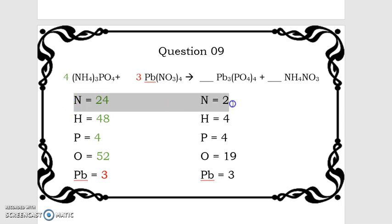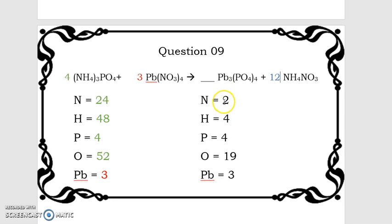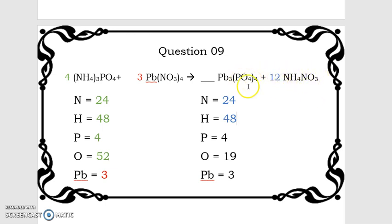Now we're going to balance the nitrogen. 2 times blank equals 24 — so 2 times 12 equals 24. This gives us 24 nitrogens. It also affects the hydrogens: 4 times 12 gives 48, so we change that to 48. Phosphorus is unaffected. For oxygens: 12 times 3 gives 36 here, plus our 16 oxygens here, for a grand total of 52 oxygens. Everything now matches.